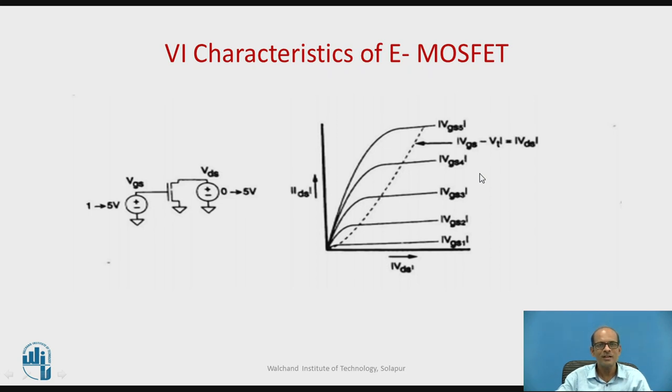Towards the left hand side is the non-saturation or linear region. On the right hand side of the dotted line is the saturation region. And for VGS less than or equal to VT, that is your cutoff region.